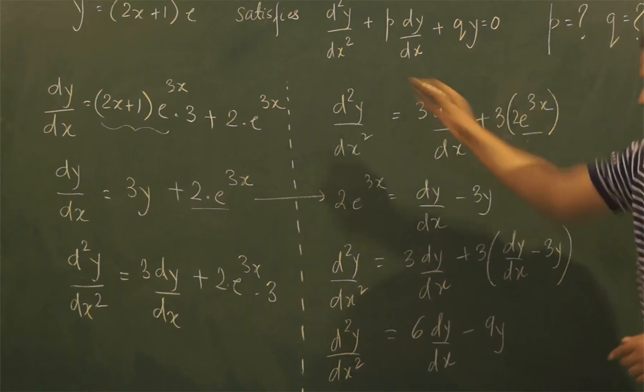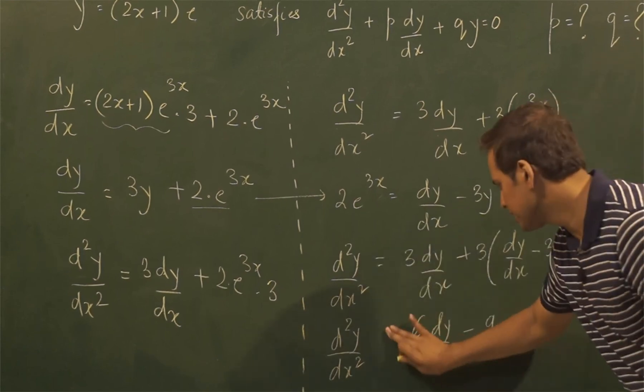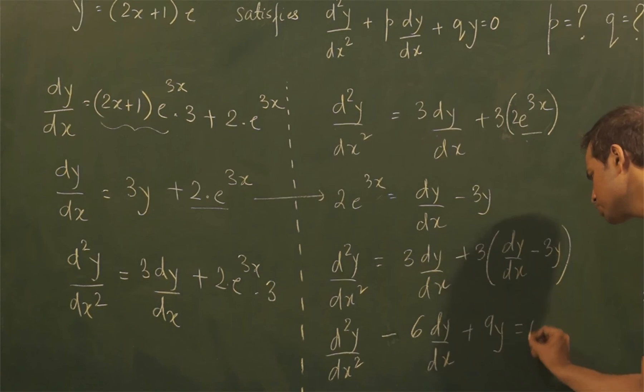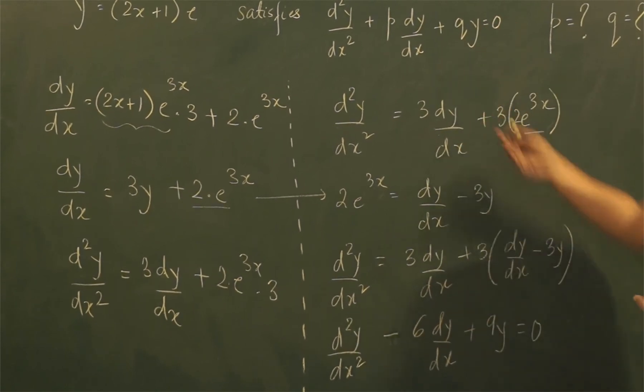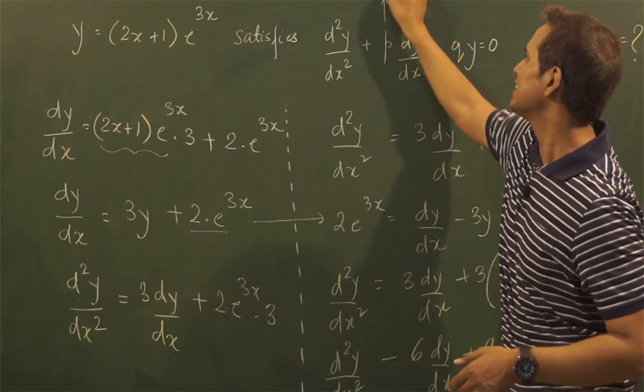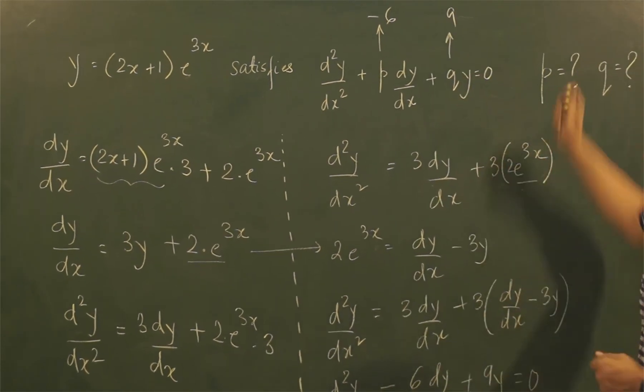Now since my required expression has all the terms on the left side, even I will do the same here. I will bring everything to the left side, so this becomes minus 6 dy/dx plus 9y equal to 0. Now directly comparing these two, what do you get? We get p as minus 6 and q as 9.